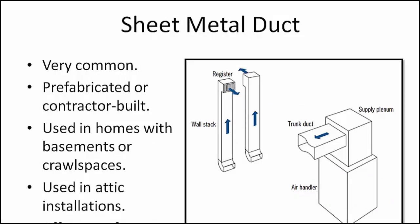Sheet metal duct is the most common means of distributing air. Metal duct systems may be assembled in the field from prefabricated components or constructed at the contractor shop. This method of air distribution is frequently used in residences that have basements or crawl spaces, since these types of structures have the physical space needed for mounting the duct beneath the floor joists. Sheet metal duct can also be used in attic installations.